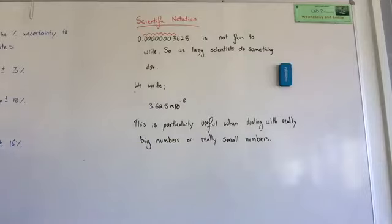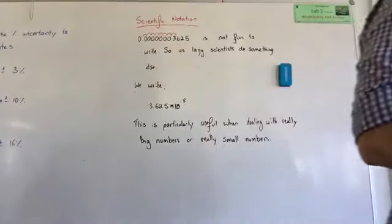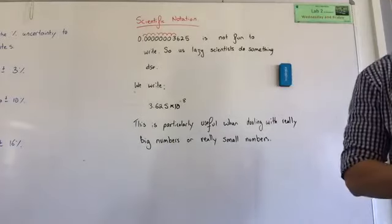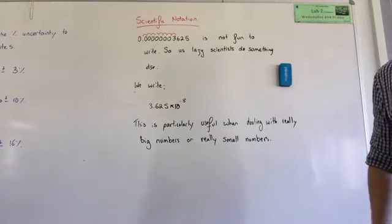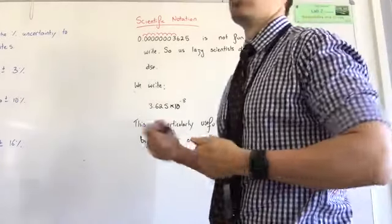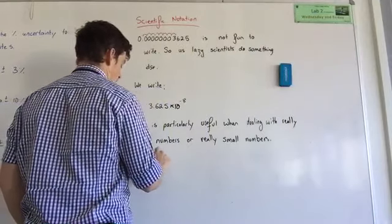If I wanted to write a really big number, so who can think of a really big number that uses scientific notation? One trillion? I know one that we use in science pretty regularly. Think about back to year 9. Speed of light. Three times... For those of us who don't know, speed of light is 3 times 10 to the power of 8.